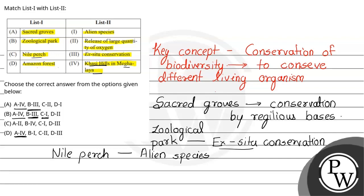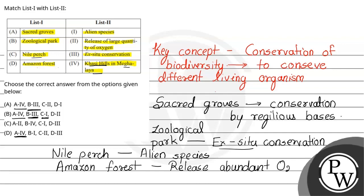And Amazon Forest — Amazon forest is so large, it is an evergreen forest which has abundant oxygen release. Because it is an evergreen forest, there is a very large release of oxygen. So this represents O2 release, and D is 2.